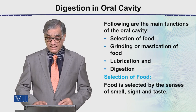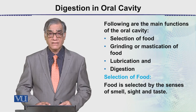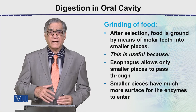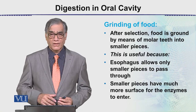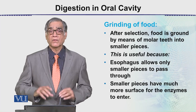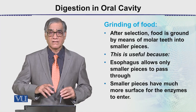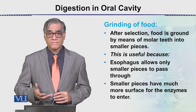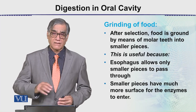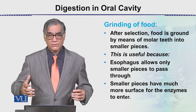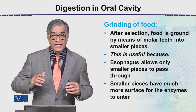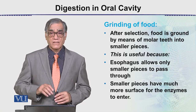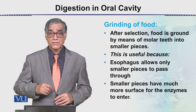The food is selected by senses of smell, sight, and taste. Then comes grinding — why grinding? When there are big pieces, they are converted into smaller pieces. The reason is that smaller pieces have a greater surface area relative to their volume, so digestion is more efficient. Smaller pieces are also easier to swallow.